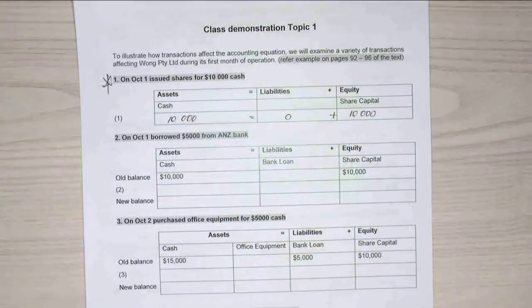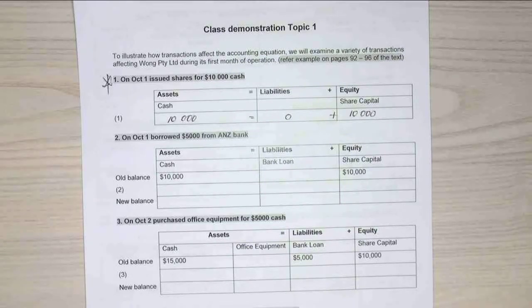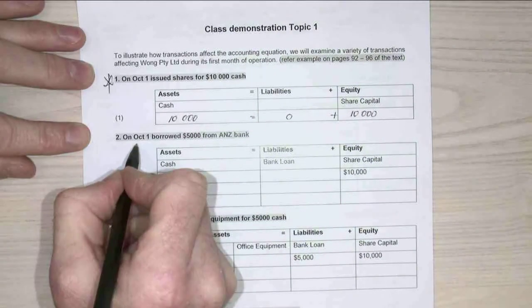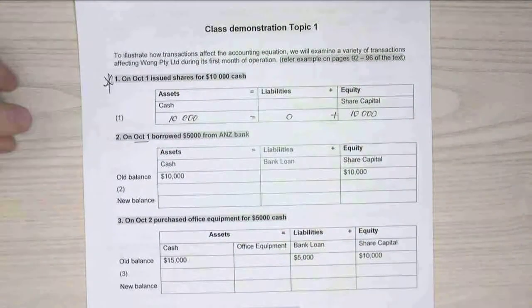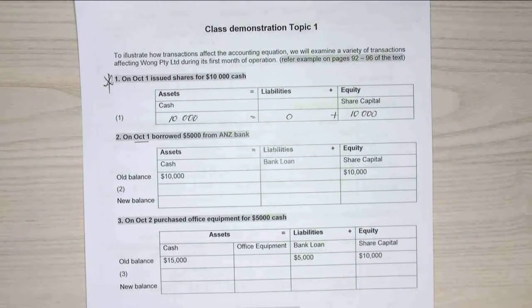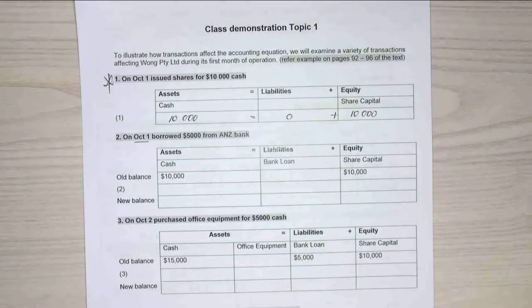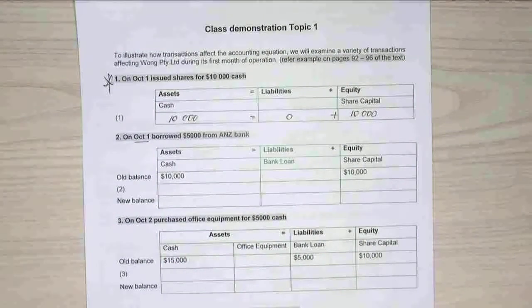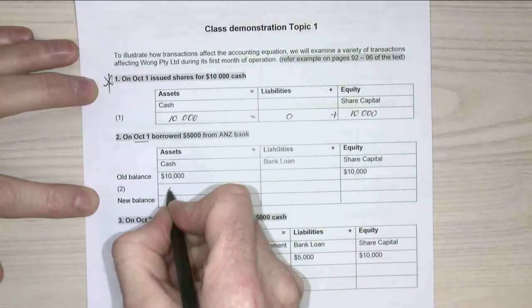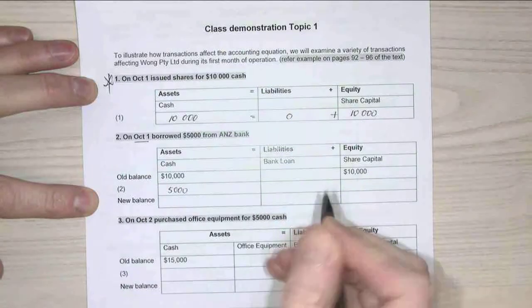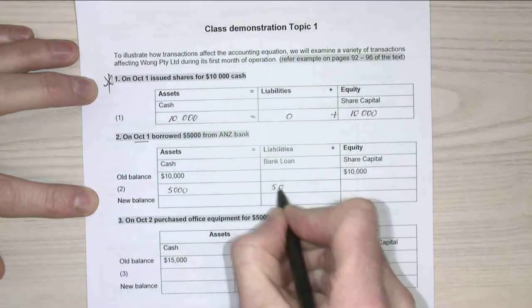Everyone okay with that first transaction? Let's look at the second transaction. On the 2nd of October, I've borrowed $5,000 from AMZ Bank. What accounts get affected? Assets and liabilities. My assets increase to $5,000 — liabilities up, assets up.